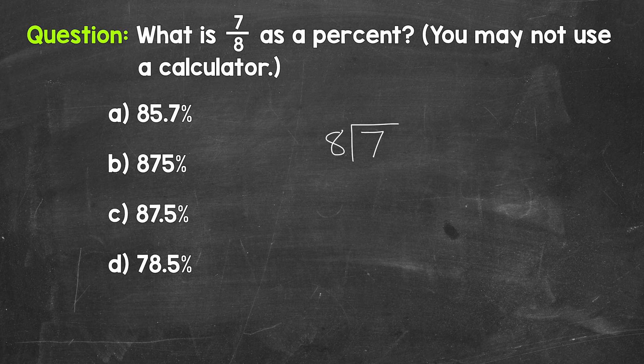So how many whole groups of 8 in 7? How many 8s in 7? We can't do that. So we need a decimal and a 0 in order to work through this. Once we have the decimal and the 0, bring the decimal straight up into where the quotient, the answer will be.